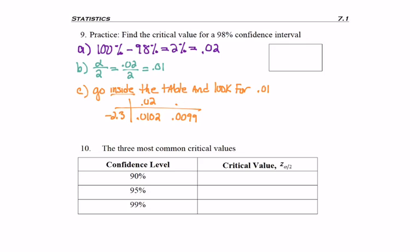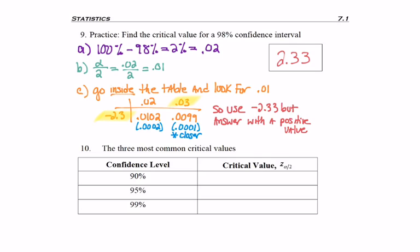So at row negative 2.3, I see .0102, which is too big, and .0099, which is too small. So I see which is closer. And 2 away or 1 away tells me that being 1 away is closer. So I want to use negative 2.33. But remember, we answer with a positive value. So the critical value for a 98% confidence interval is positive 2.33.